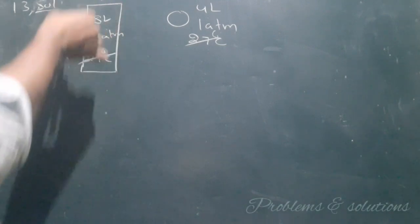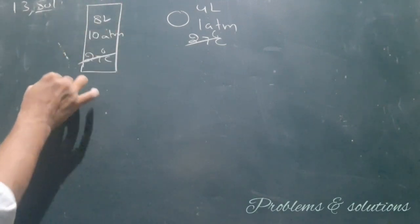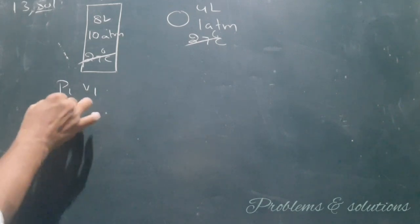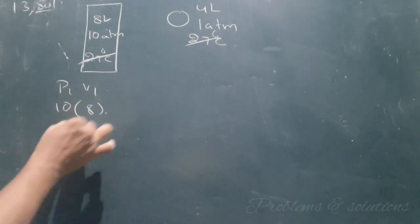So here the total amount is P1V1, right? So pressure is 10 and volume is 8, so total is 80.